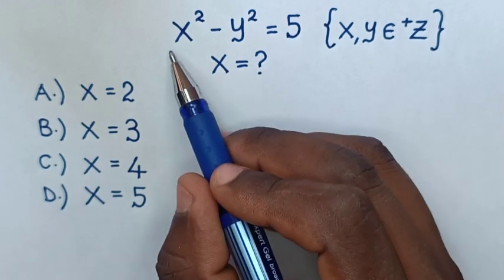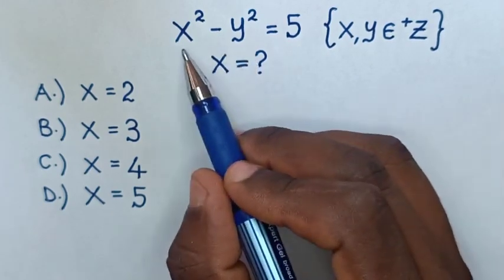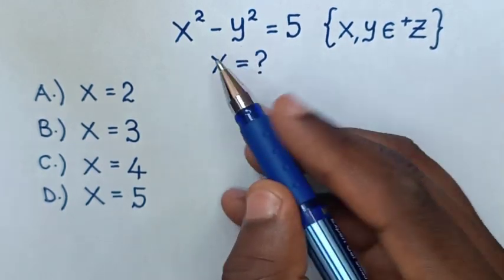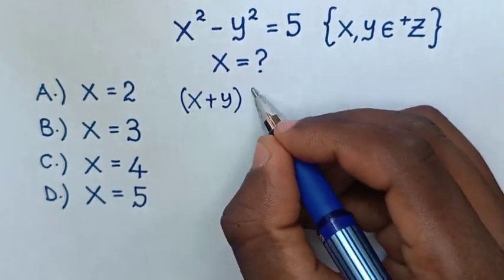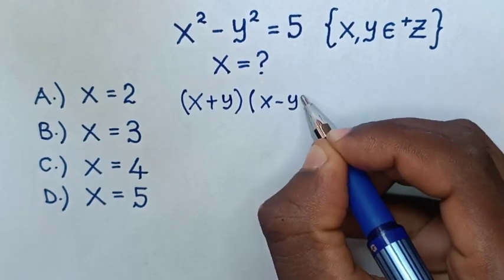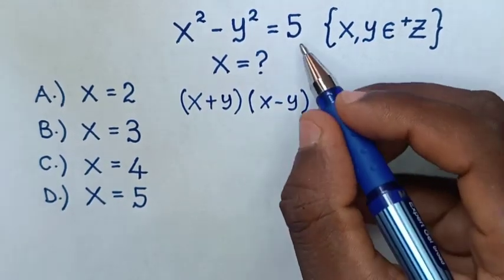from this equation, x squared minus y squared can be factored. This is the same as x plus y times x minus y, which equals 5.